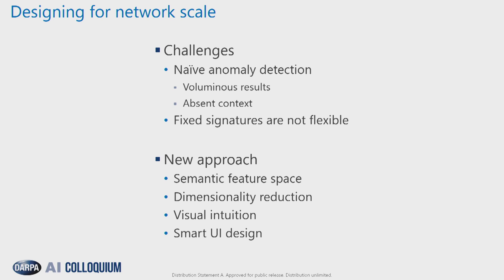For this new approach, what we're going to need to do is construct a semantic feature space that actually captures the functions of what's happening within the domain. Then we're going to use dimensionality reduction to achieve scalability in our computations, as well as to bring things down to two dimensions where our visual cortex can come into play understanding the results. And then, with this visual intuition, we'll use good design to bring in domain context such that our analysts can immediately operate off of the results of our algorithms.